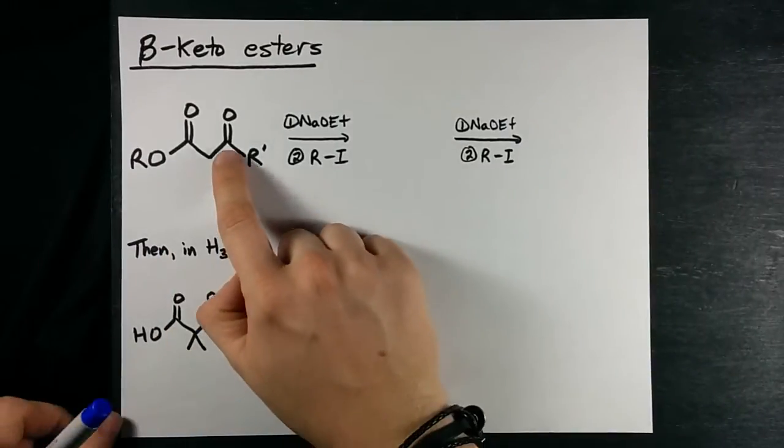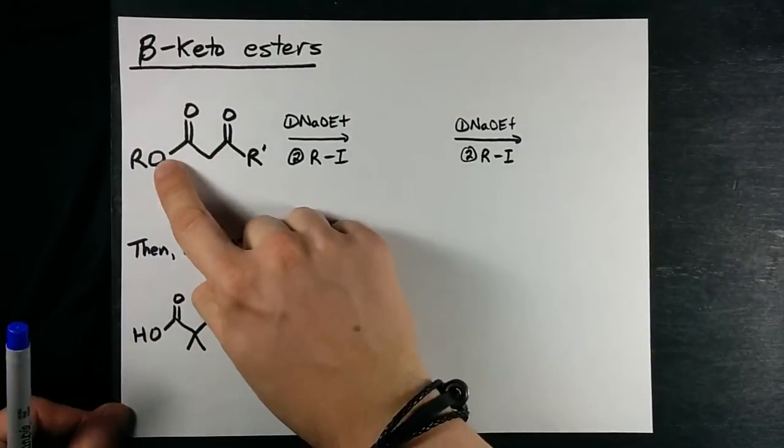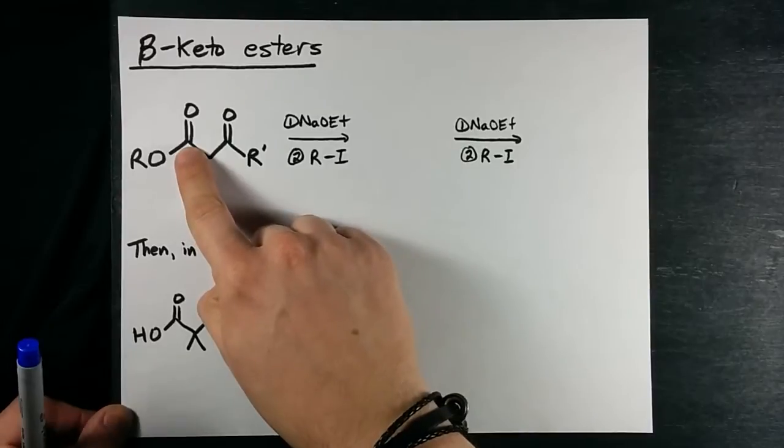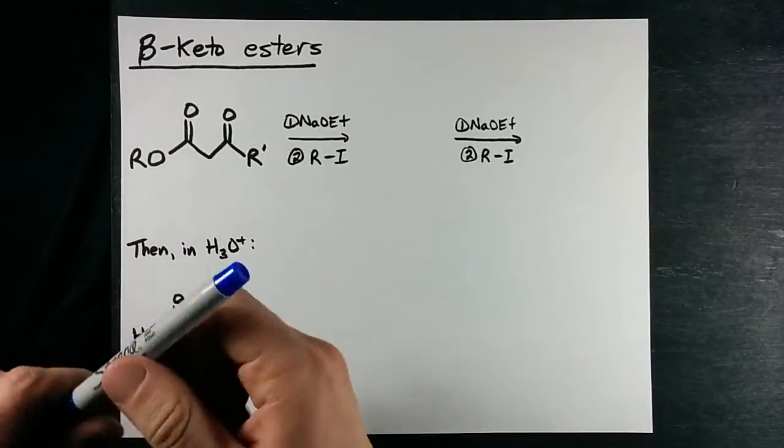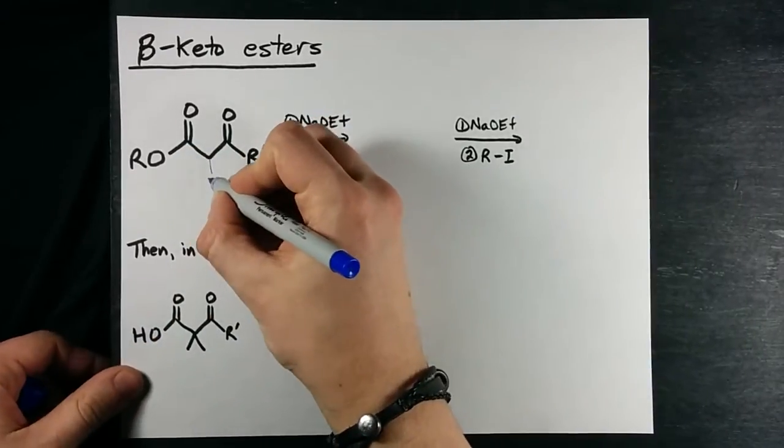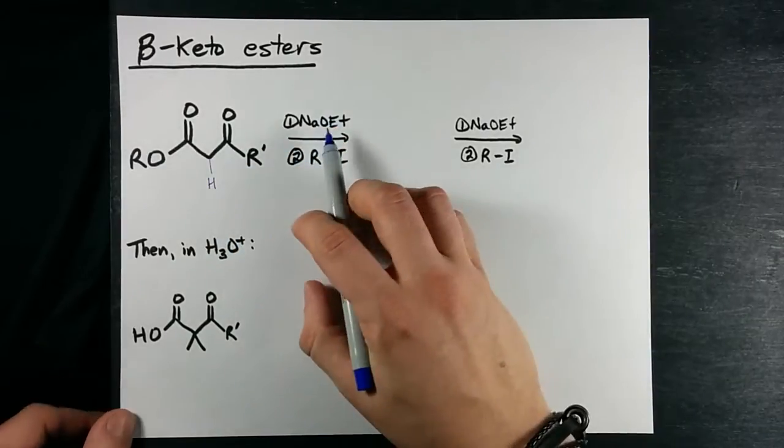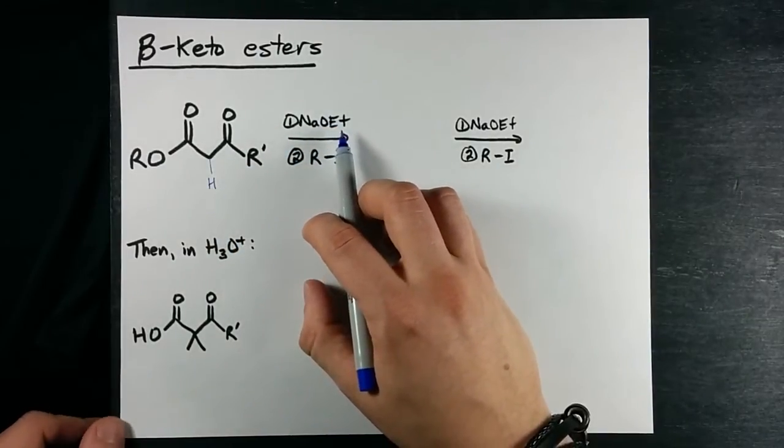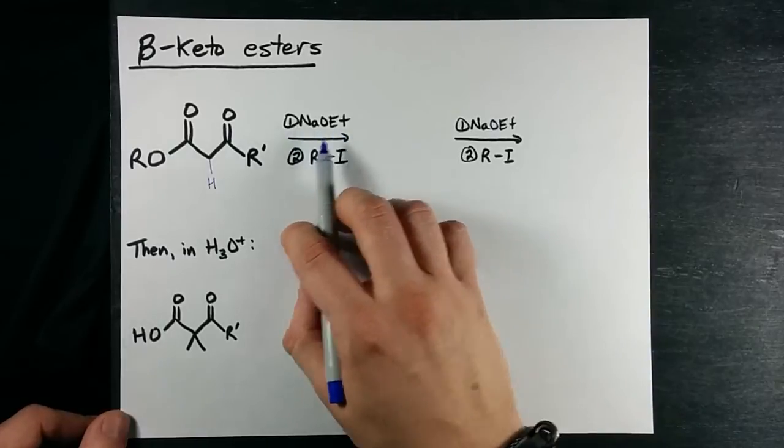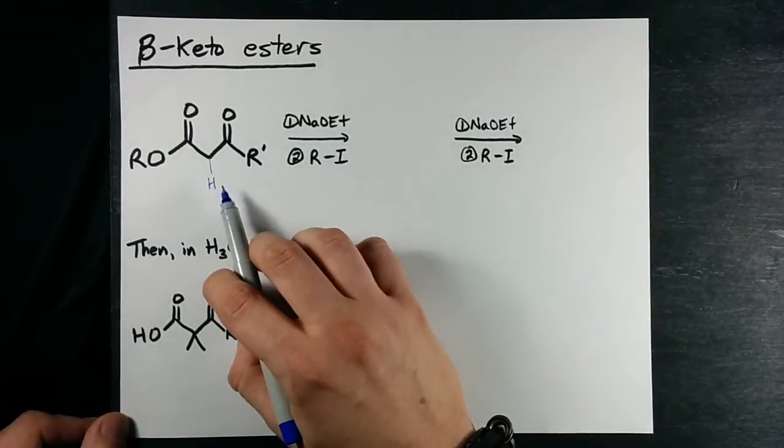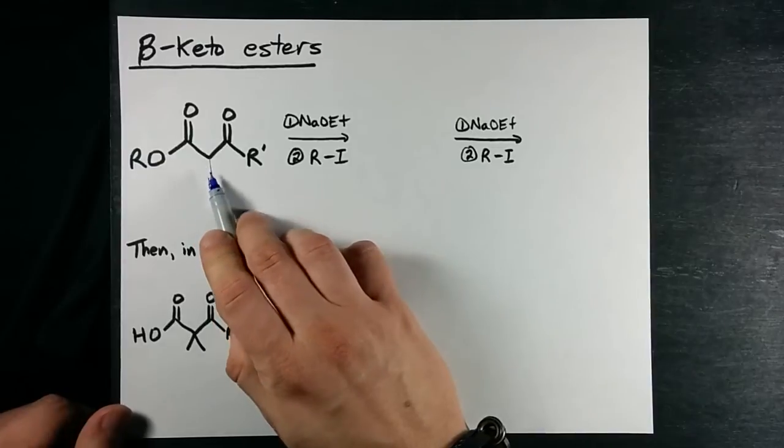When you have a ketone with an ester connected to the beta carbon, that makes the alpha protons even more easily removed. NaOEt or sodium ethoxide is strong enough to rip it off, and when you get the conjugate base which has a lone pair of electrons on this carbon, it will nucleophilically attack this alkyl group.